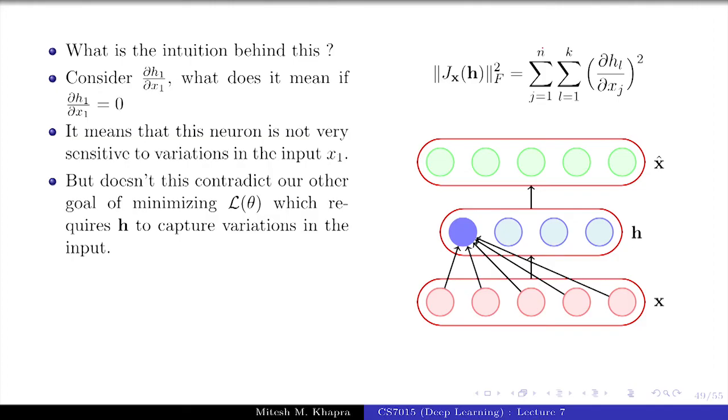We have added a contradictory condition which says that we do not want the neuron to capture the variations in the data. L(theta) says that I should be able to capture these variations, otherwise I will not be able to reconstruct. If all my h_i's are not sensitive to variations in x_1, I give it any x_1 and it will produce the same h_i. That means it's not capturing any important characteristics of the data.